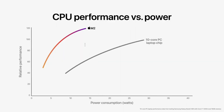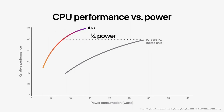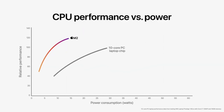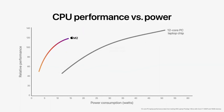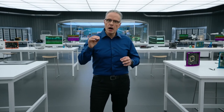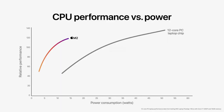Compared to PC chips: the 10-core PC laptop chip is defeated by M2, which uses less power while giving nearly two times the performance. The 12-core laptop chip is also defeated — M2 delivers nearly 90% of its peak performance in a quieter, thinner laptop.